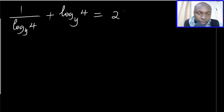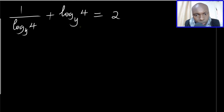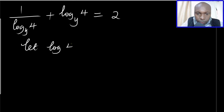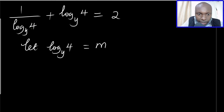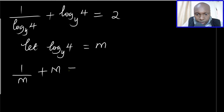Now by doing that I'll be able to solve since the bases are the same — the base is y, uniform now. From this step, you can let log of 4 to the base of y be a letter m. Therefore, instead of 1 divided by log of 4 to the base of y, you have 1 divided by m, plus m, equals 2. You can see the equation is becoming simpler to work with.